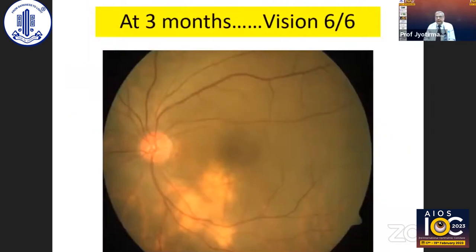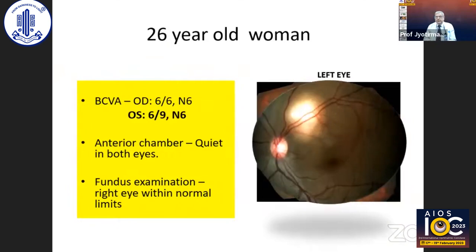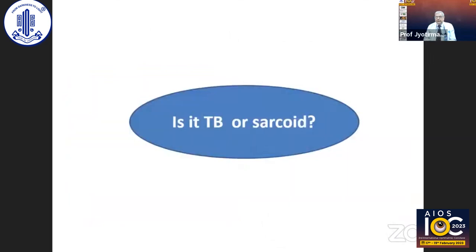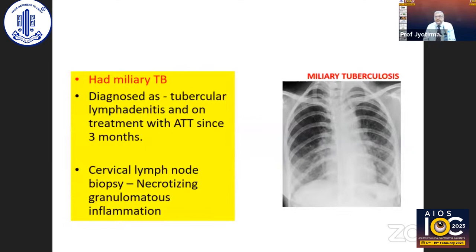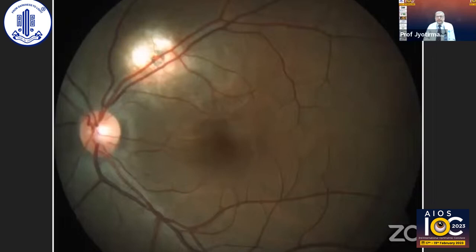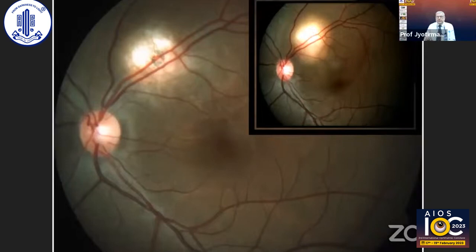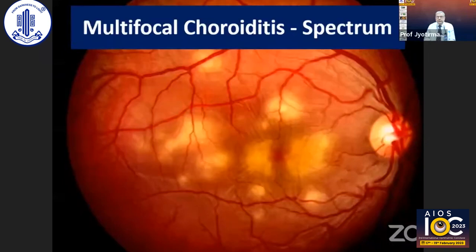This is a similar case — a 26-year-old woman with a single-sided whitish lesion in the choroid. The dilemma is whether it is TB or sarcoid. Plain chest X-ray showed pulmonary tuberculosis with pulmonary lesions in the lung. Cervical lymph node biopsy showed necrotizing granulomatous inflammation. The patient responded to anti-tubercular therapy, with complete resolution of the lesion.